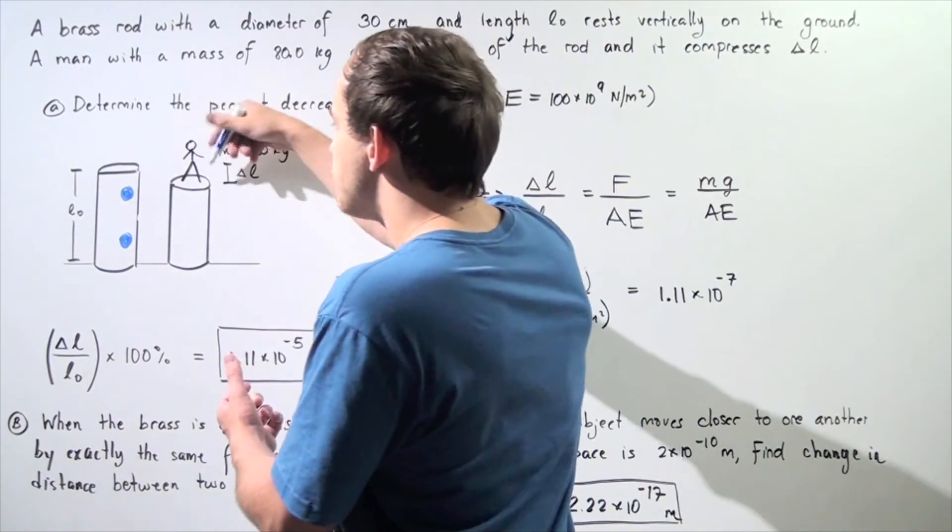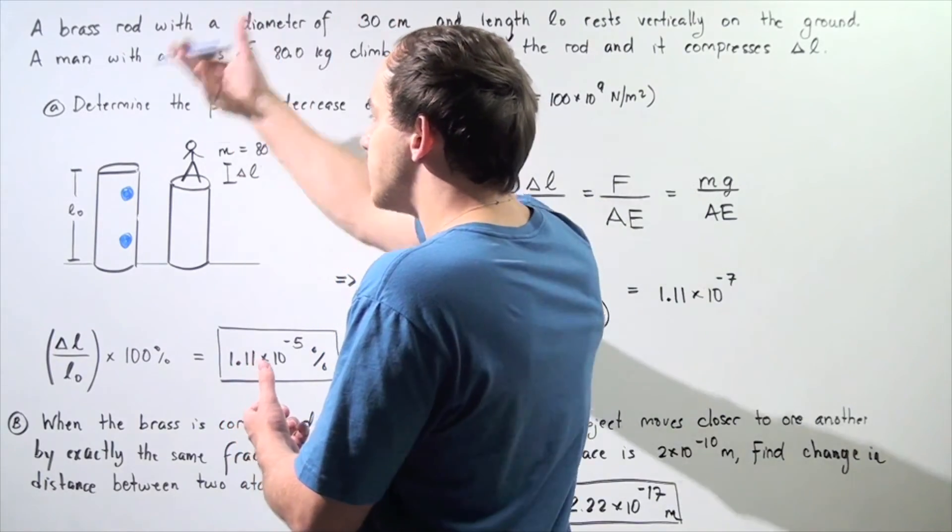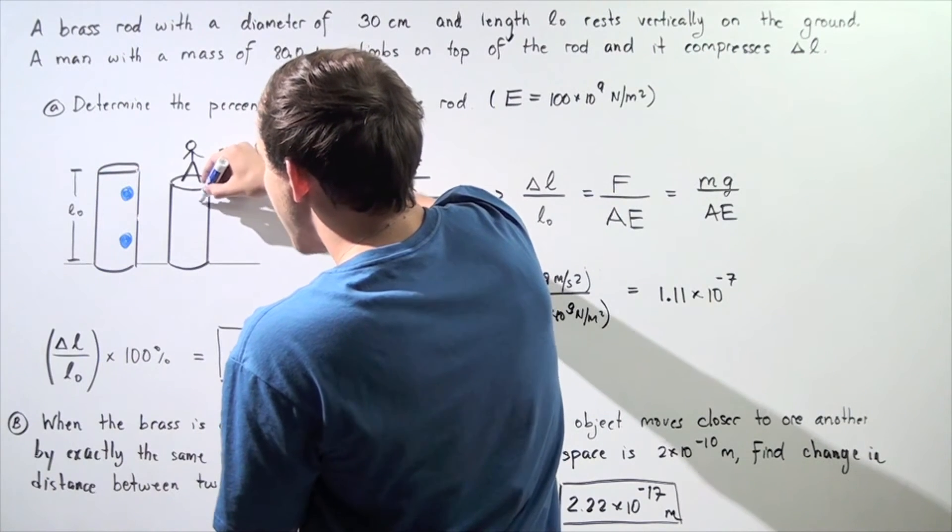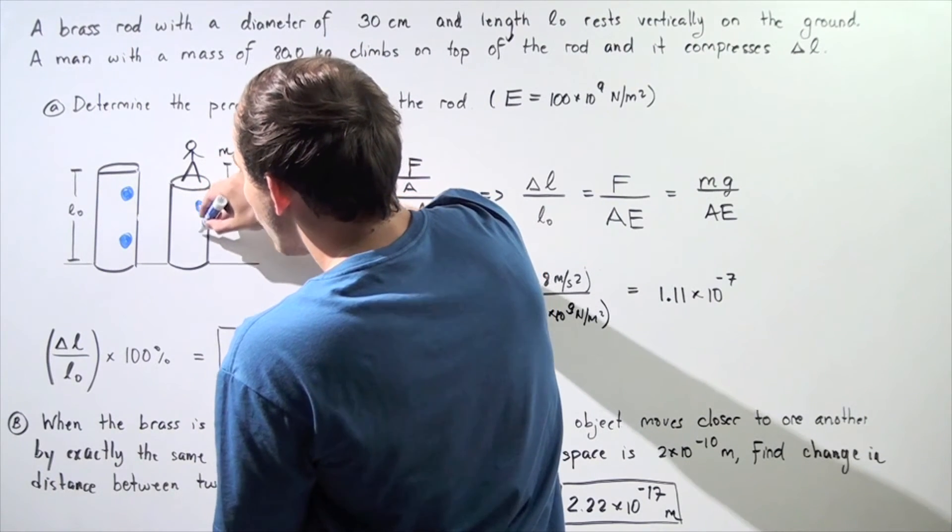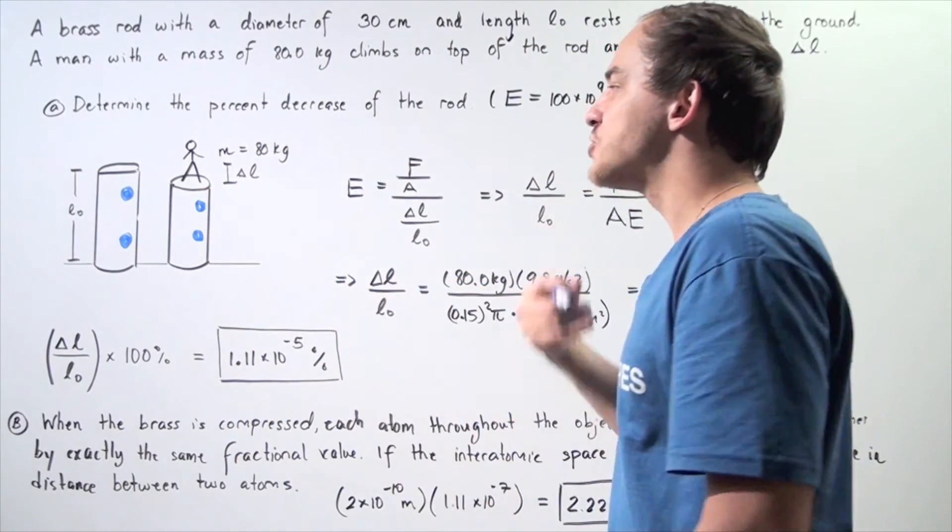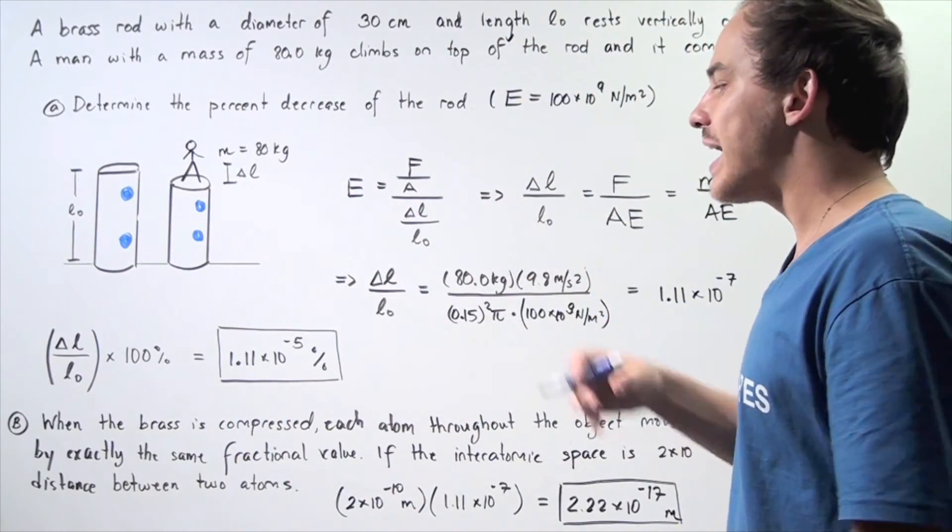Now, after the object, after the person climbed on top of the object, these two atoms moved closer to one another. And we want to calculate what the distance is, what the change in distance is. How much closer did the two atoms move?